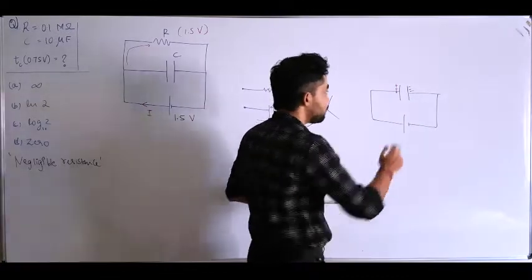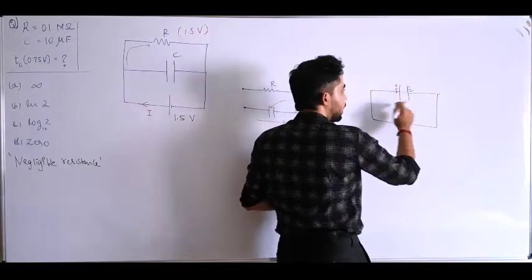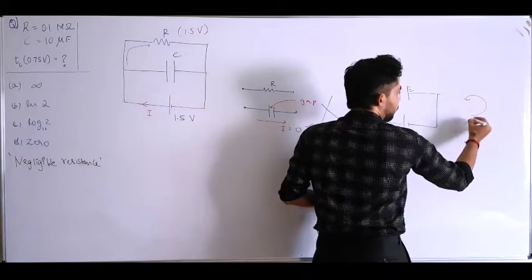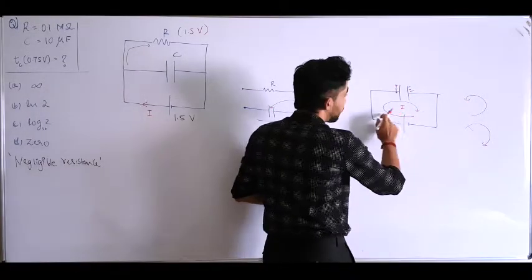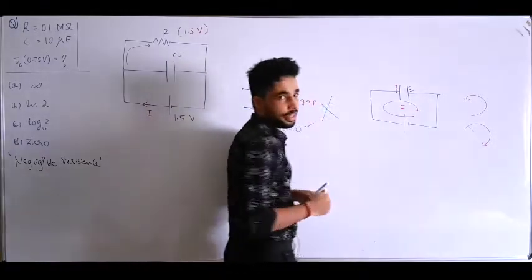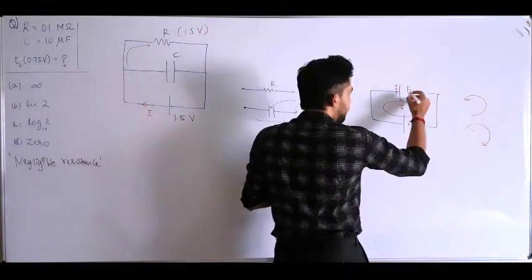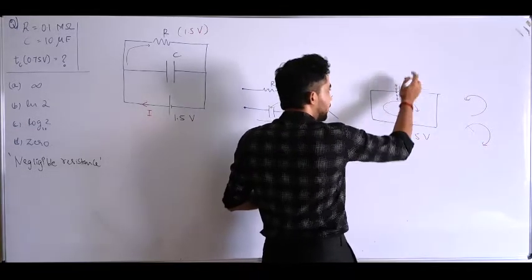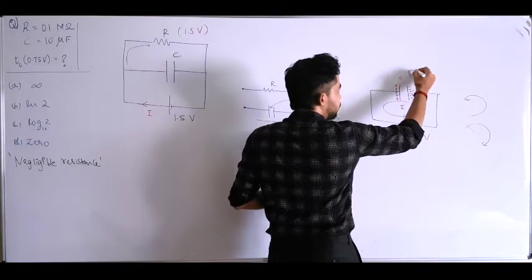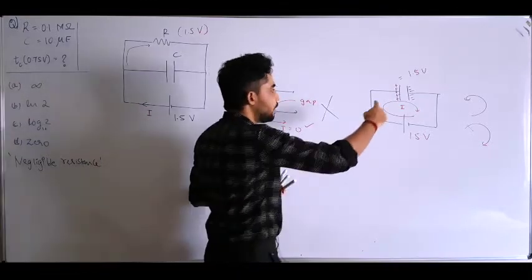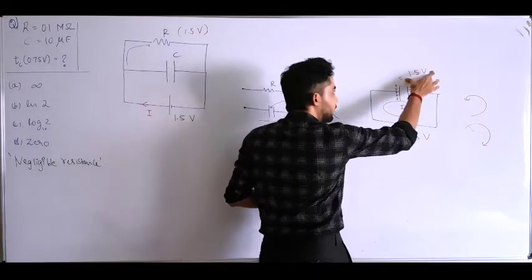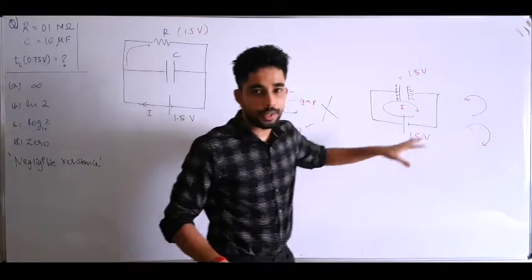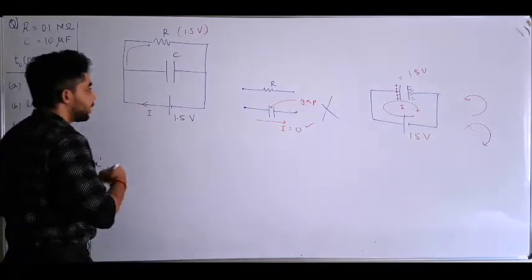The negative charges flow through the wires, so the direction of conventional current is opposite to that. There will be a current flow in this path but not across the capacitor. Eventually, as the negative charges build up, there is a potential difference across the capacitor. Once that matches 1.5 volt, the current flow stops. Initially there is a large current, and once the capacitor reaches 1.5 volt, no more current flows.